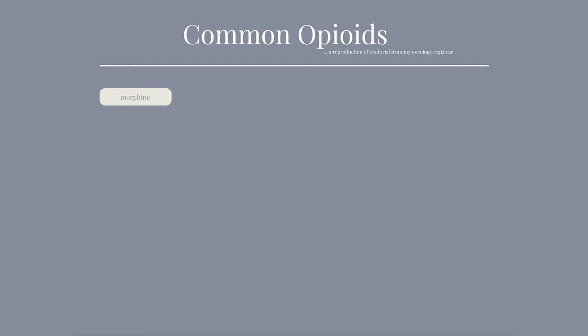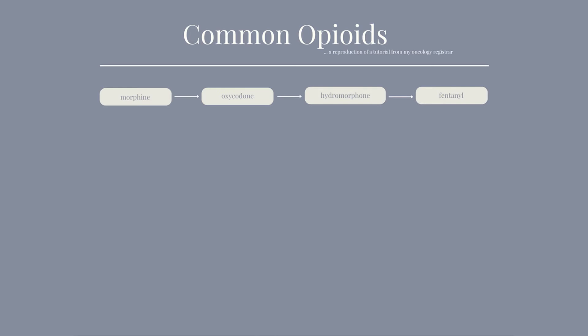Sticking to the common ones in order of ascending potency, we're going to talk about morphine, oxycodone, hydromorphone, and fentanyl. Generally speaking, you would start with morphine or oxycodone and then move up to fentanyl or hydromorphone as required. We'll categorize them by immediate or slow release forms, and within those subsets there are different routes of administration available.